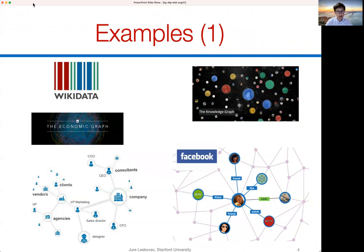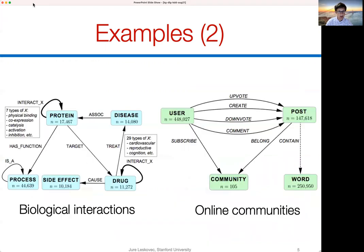Similarly, we can think of biology as a giant knowledge graph relating different biological entities. For example, here I'm showing a schema of a knowledge graph with proteins related to diseases, drugs having side effects, and proteins participating in different biological processes, with different numbers of entities of each type as well as many different relation types connecting them.